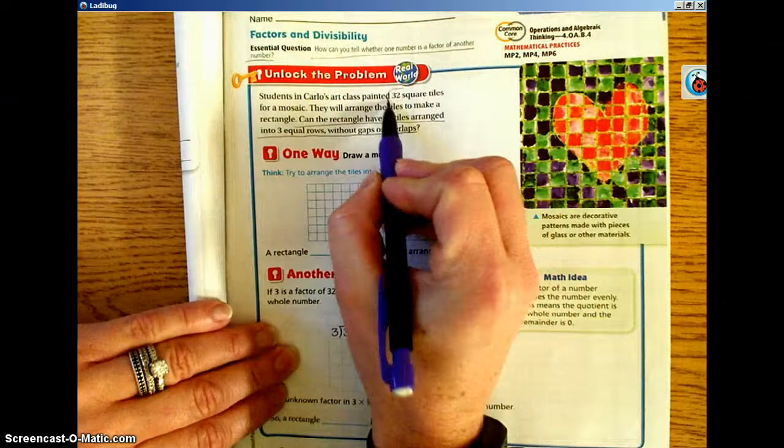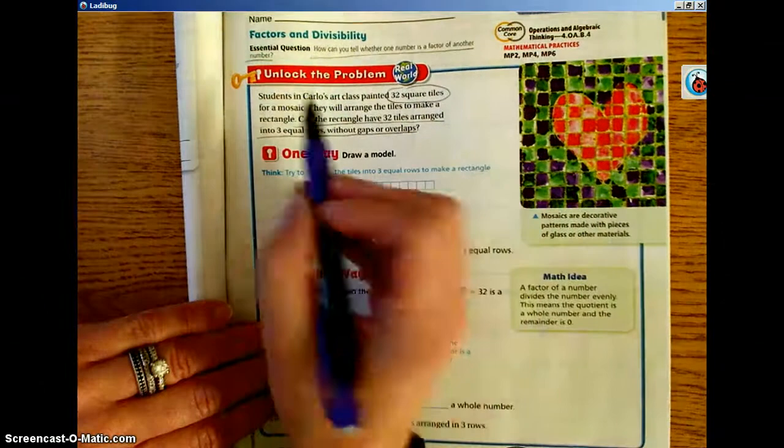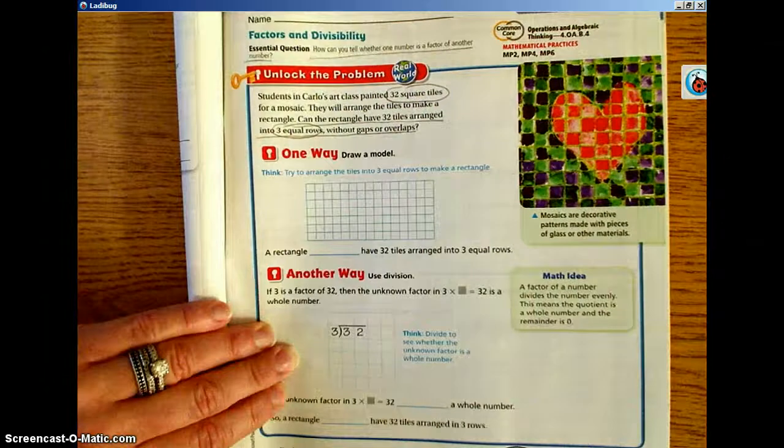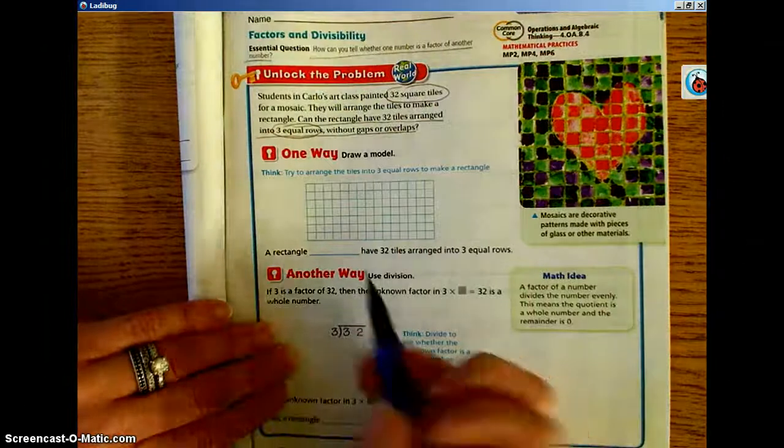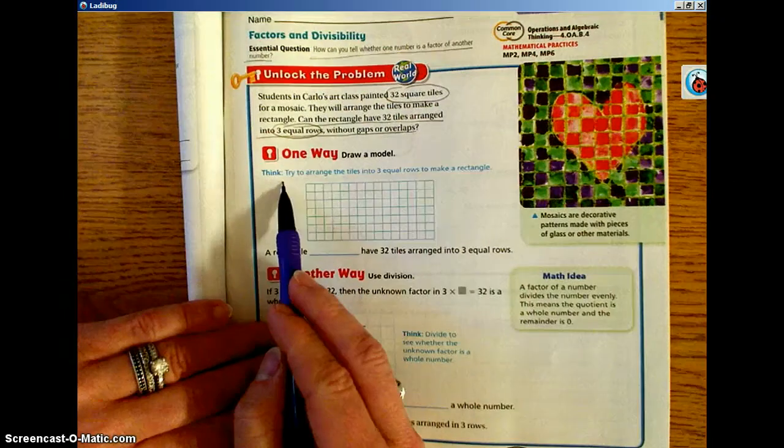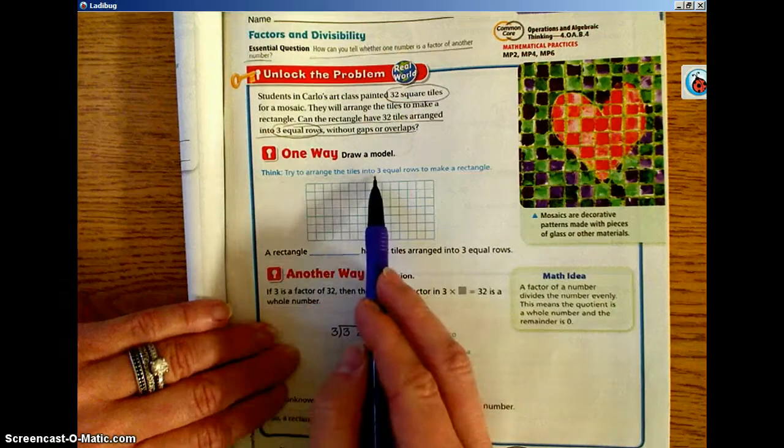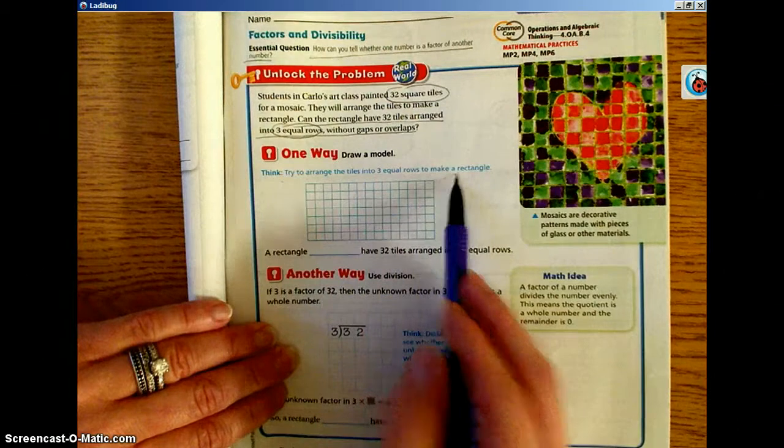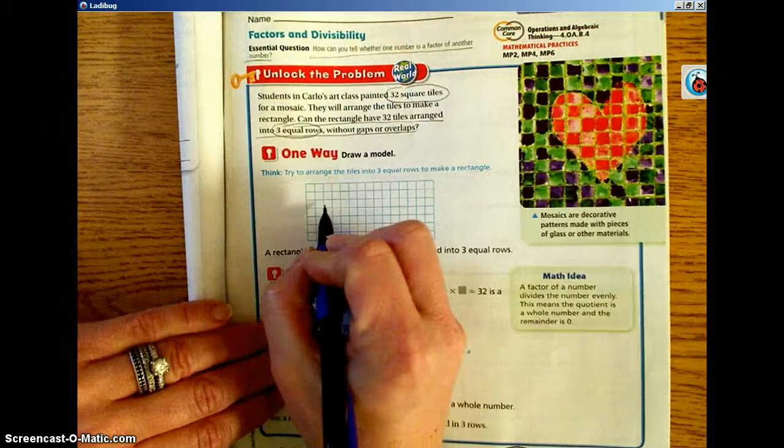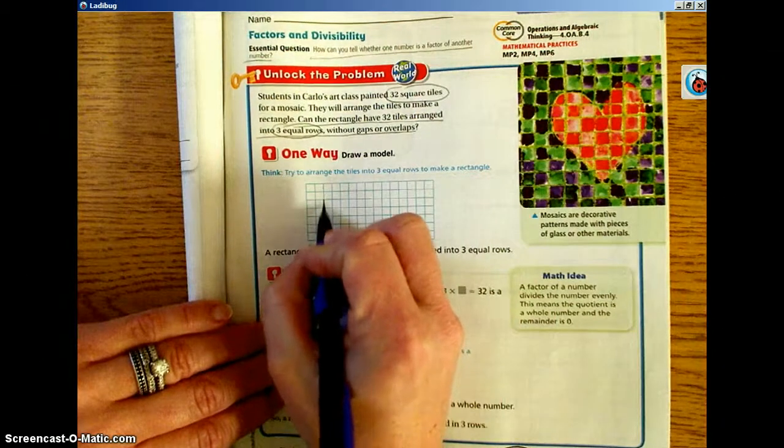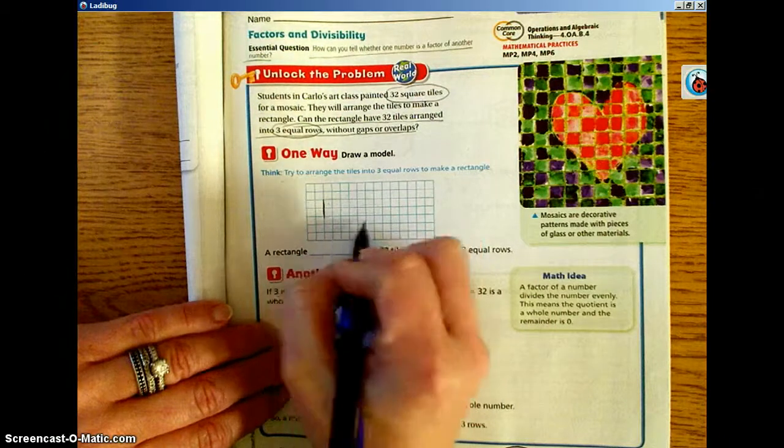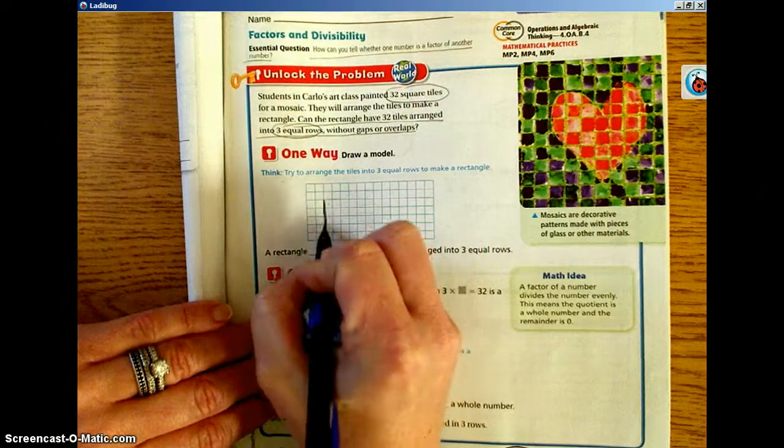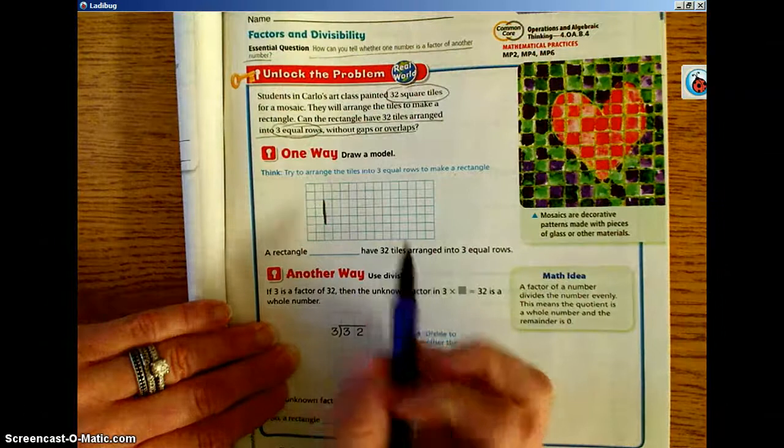The clues we need to use are 32 square tiles and 3 equal rows. Right now you need to try to think, can we arrange the tiles into 3 equal rows to make a rectangle? A row is going to go across. We already know that a row is going to move this way. Can we make 3 equal rows?